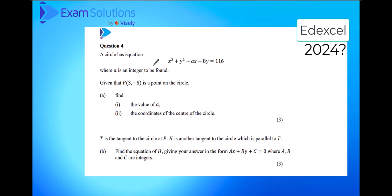And so the first part of our circle question, we're given an equation. It has an unknown value A within it where A is an integer to be found. We are given a point on this circle, and so we have the information here to be able to identify A. And so our first marks are for finding the value of A and the coordinates of the centre of the circle.